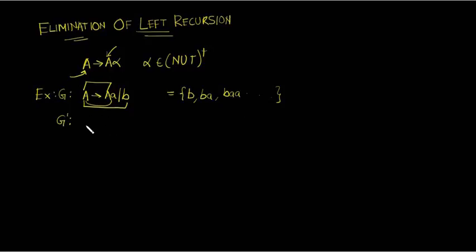What we can do is have the production of the form A gives B A dash, or A prime. This gives the first symbol B, and this A prime gives the next A's.